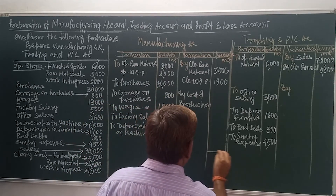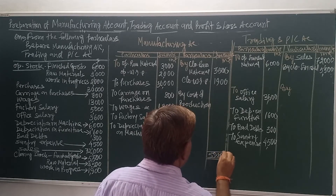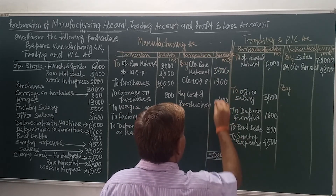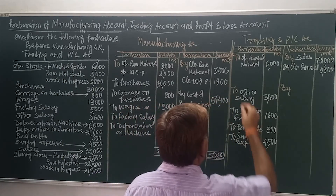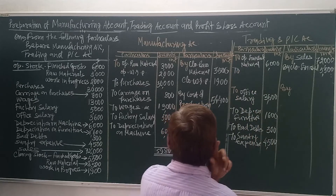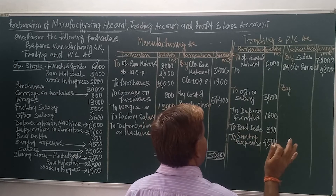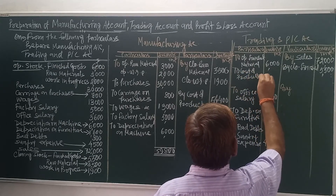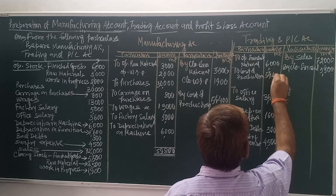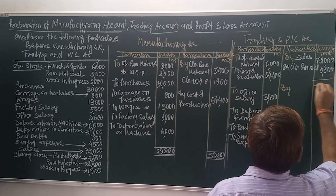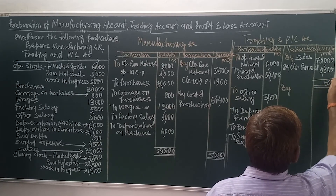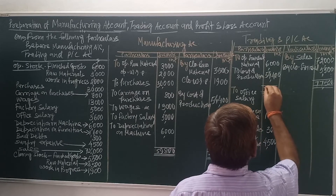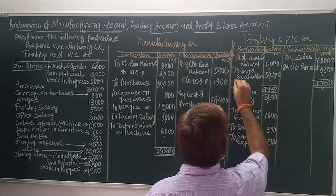The total comes to 59,800. Totaling should be done in parallel lines for each account. The credit side gives us 54,400 — this is our cost of production. Cost of production means the entire expenses related to production. This expense in nature will go to the debit side of trading account as cost of production — 54,400. After recording this, we find the difference of the trading account. Credit is more, total comes to 77,500. The difference that comes out will be called gross profit.